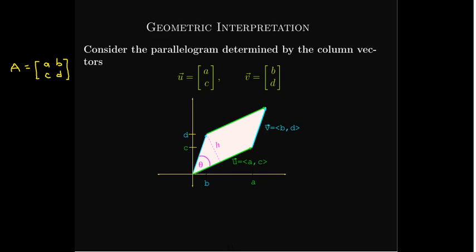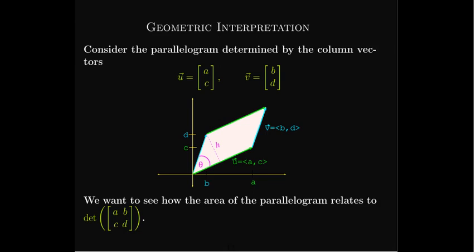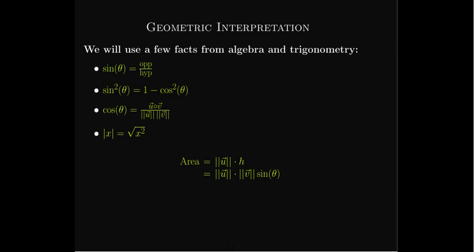What's the connection between the determinant of matrix A and the area of this parallelogram? Area is just base times height, so the base would be the length of the green vector U times H. From triangle trigonometry, the length of vector V is the hypotenuse of the right triangle, so H can be written as the length of V times sine theta. To proceed analytically, we use sine theta as opposite over hypotenuse to rewrite the height, and we'll use the Pythagorean identity, the dot product formula for cosine theta, and the fact that the square root of x² gives the absolute value of x.